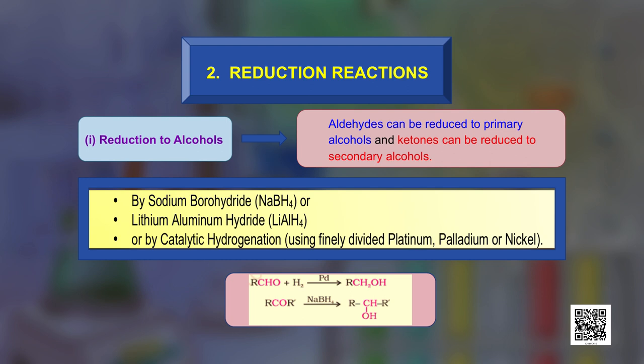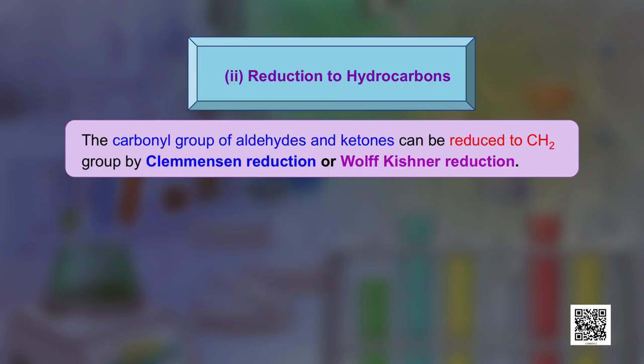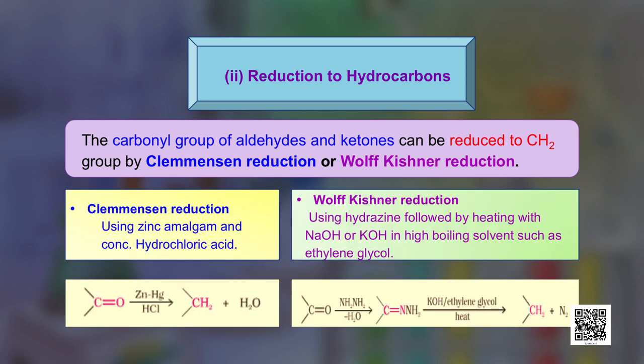The carbonyl group of aldehydes and ketones can also be reduced to a CH₂ group by two methods: Clemmensen reduction using zinc amalgam and concentrated hydrochloric acid, or Wolff-Kishner reduction using hydrazine followed by heating with sodium hydroxide or potassium hydroxide in a high-boiling solvent such as ethylene glycol.